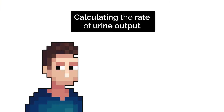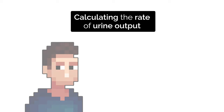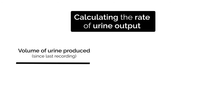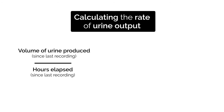Hey there, it's Lewis from Geeky Medics. So to calculate the rate of urine output, we need to work out the volume of urine that has been produced since the last recording, and then divide that by the number of hours that have passed since that last recording.